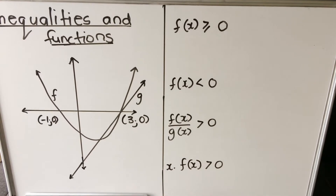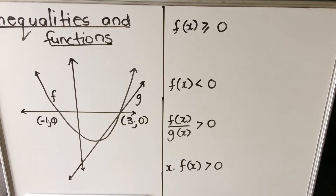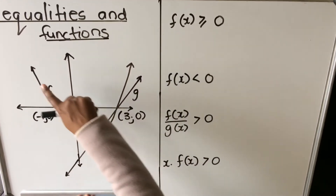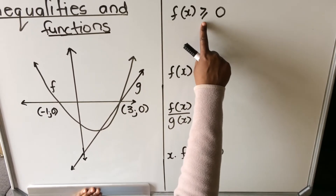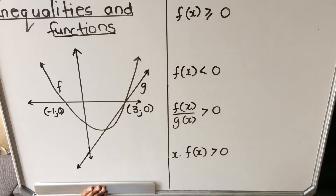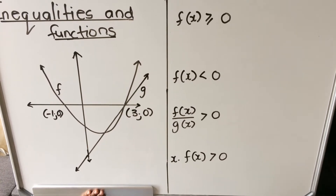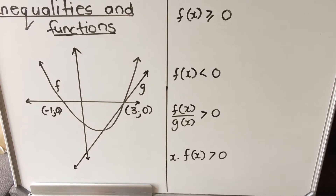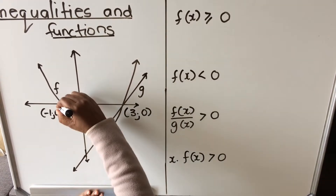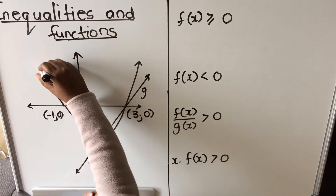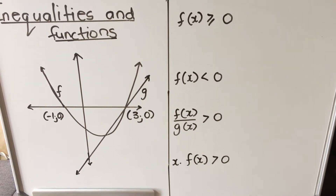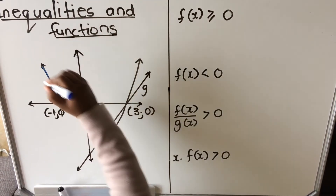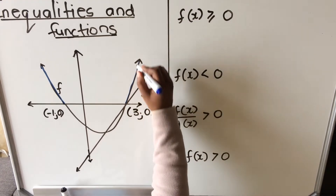That is very important to remember. When you're looking at a drawing like this, it means here my function is positive and here my function is negative. Let's look at the first question. The first question says find f(x) greater than zero — greater than zero means positive. So the question is: find the x-values where the function is positive. My function is above here.